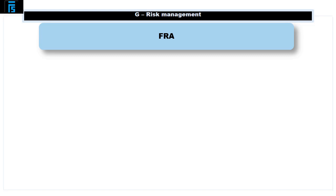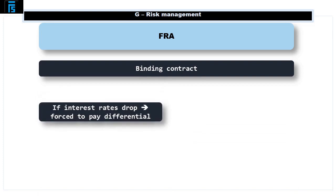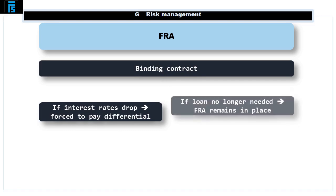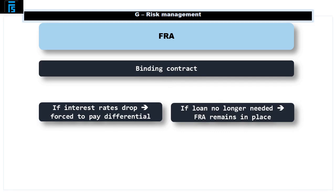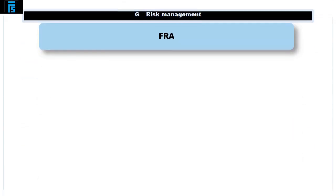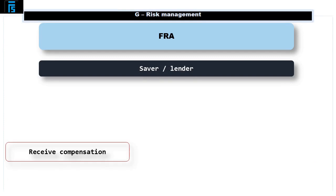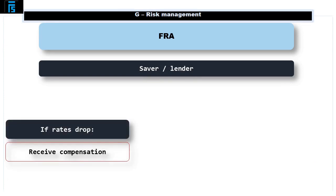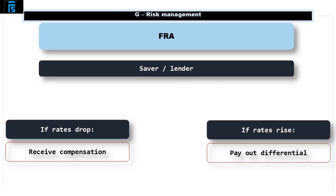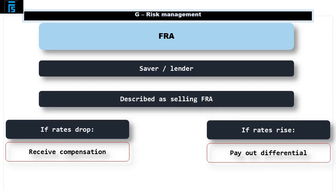FRAs guarantee a rate, but they are a binding obligation. If rates drop in the intervening period before we sign the loan, we're forced to pay under the FRA. Equally, if circumstances change and we don't need the loan, the FRA remains in place and we'll be obliged to pay if rates drop, albeit we'll have a receipt if they rise. It's worth noting that a saver or lender can also use an FRA that will pay them compensation if rates drop, and they'll have to pay out under an FRA if rates rise — in other words, the net rate is protected. A saver is described as selling an FRA, whereas a borrower is described as buying an FRA.